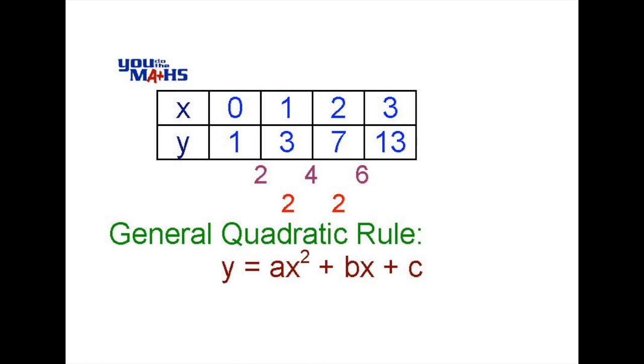The general rule for a quadratic is an expression with an x squared term and an x term and what's called a constant at the end. So we need to work out a rule to find these a, b and c values to fit in our quadratic rule.